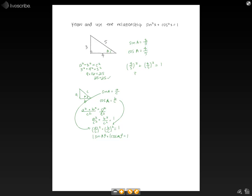If we distribute the square, we would have 3 squared over 5 squared, plus 4 squared over 5 squared, equals 1, which is 9 over 25, plus 16 over 25, equals 1.